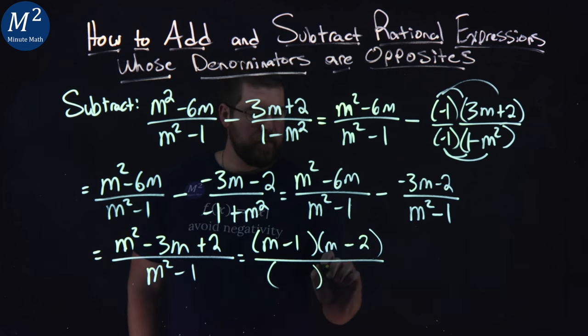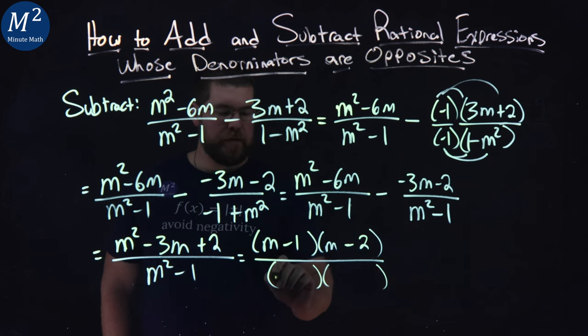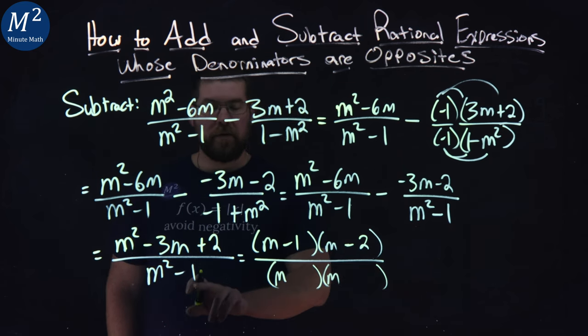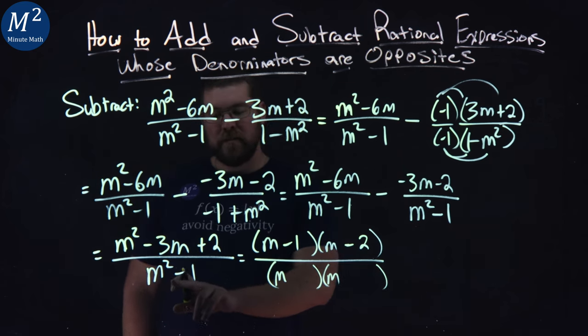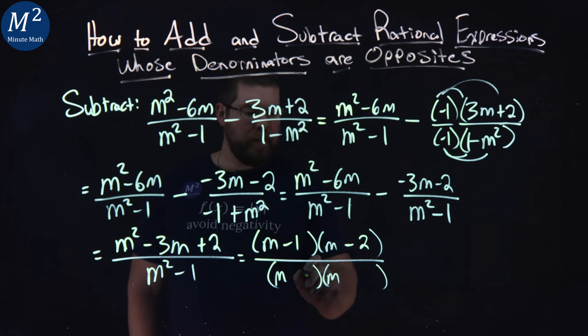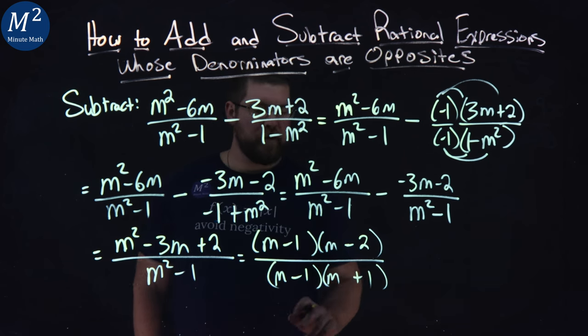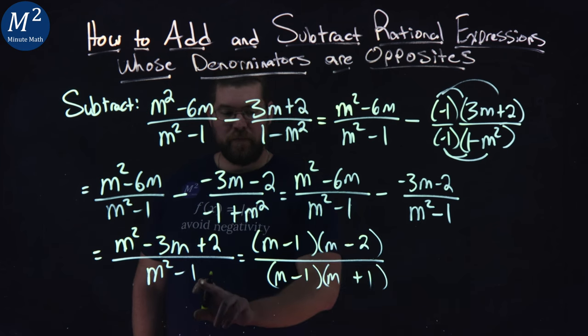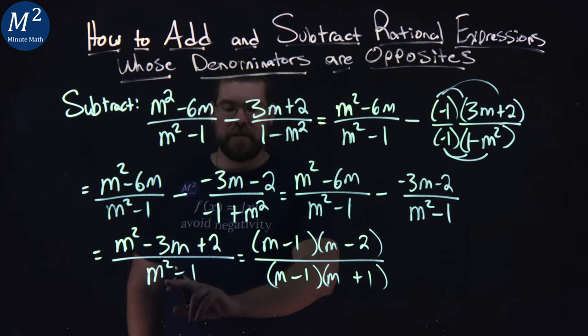What about the denominator? What does this factor to be? Well, which numbers multiply to negative 1, but add to be 0, because we have no m value, and that's going to be minus 1 and positive 1. Negative 1 times positive 1, negative 1. Negative 1 plus 1 is 0.